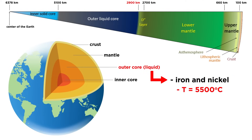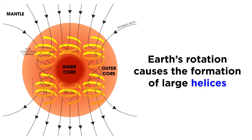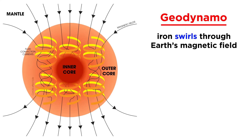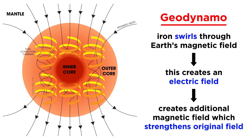Here, temperatures reach 5,500 degrees Celsius and pressures exceed 300 million times the atmospheric pressure on the surface. Since this layer is a liquid, it can easily convect, carrying heat from the inner core into the mantle through the D'' layer. The rotation of Earth on its axis further modifies the flow and creates large cylindrical helices. Since iron is an electrically conductive material, when it swirls through Earth's magnetic field, it creates an electric field, which in turn creates an additional magnetic field, strengthening the original field.